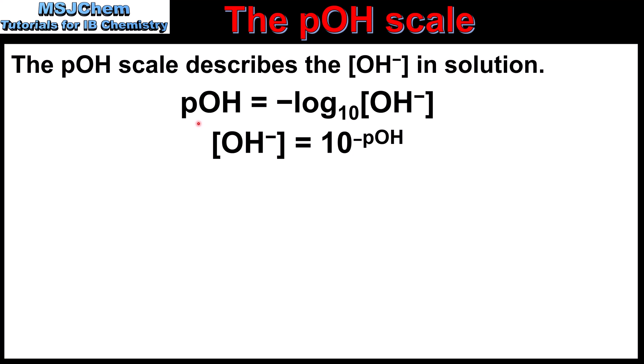This might look similar to the equation used to calculate pH, except that the pH of a solution is equal to the negative log of the hydrogen ion concentration, and there are some similarities between the two scales. Below that, we have the equation to calculate the hydroxide ion concentration if you know its POH value: the hydroxide ion concentration is equal to 10 to the power of the minus POH value.